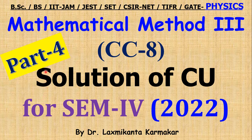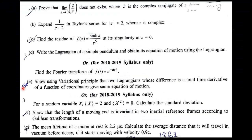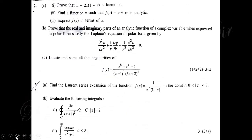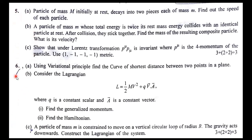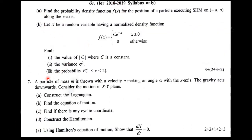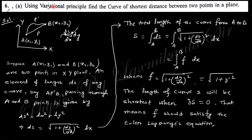Hello, welcome everyone. This is Part 4 of the solution on the paper Mathematical Methods 3, CC8, for Semester 4. This is the 2022 question paper. Questions 1 was discussed in Part 1, questions 2 and 3 in Part 2, and questions 4 and 5 in Part 3. Today we discuss question number 6, which has portions a, b, c and also a, b. In the upcoming session we will discuss questions 7 and 8.